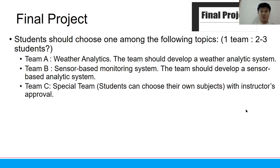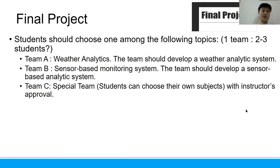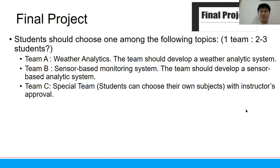For the final project, I will divide it into three areas. Teams can be two or three students, depending on how many students enroll. I will distinguish teams into three tracks: Team A is for weather analytics, Team B is for sensor-based monitoring systems, and Team C is a special team where you choose your own subject.